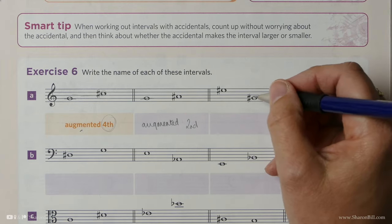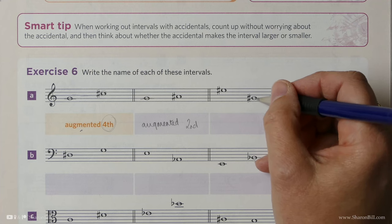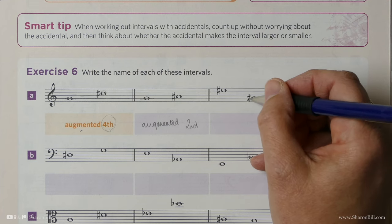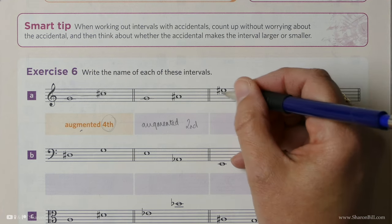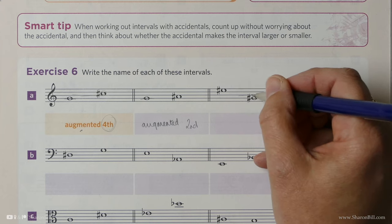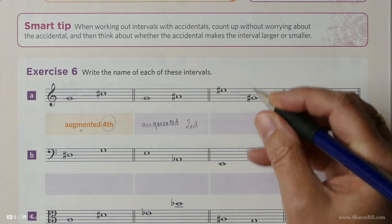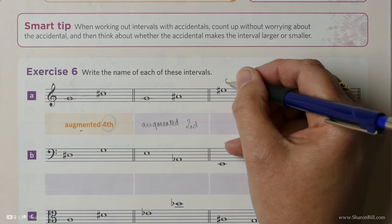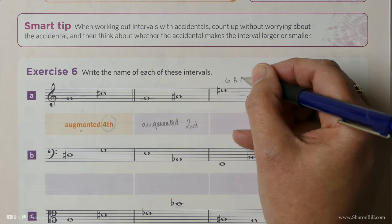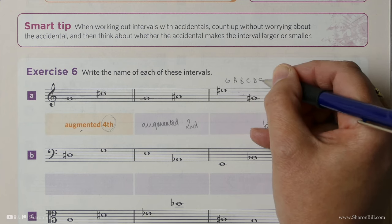And then here, this does seem like a tricky one to begin with. First job, let's get the number. So it's a G to an E. One, two, three, four, five, six. It's a sixth of some sort. That's half the job done. And we know G, A, B, C, D, E. One, two, three, four, five, six.